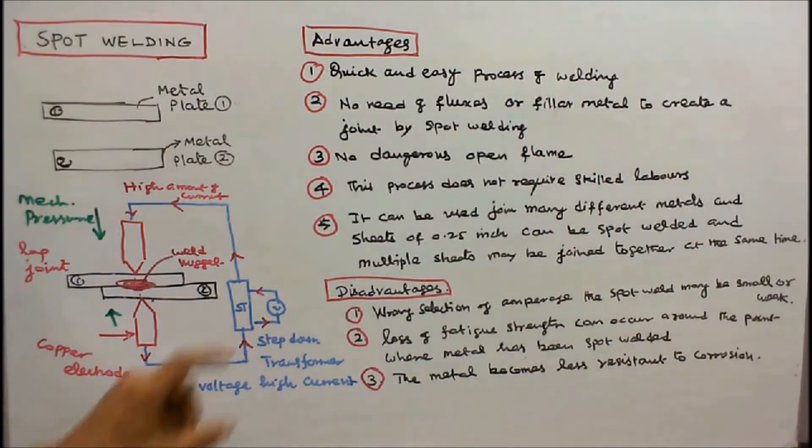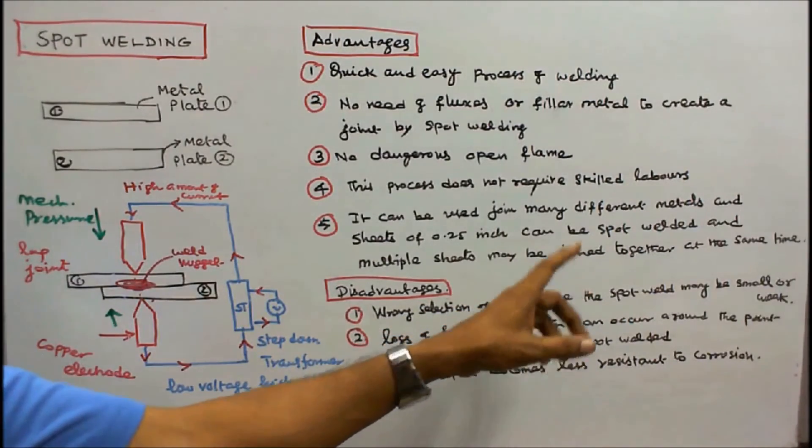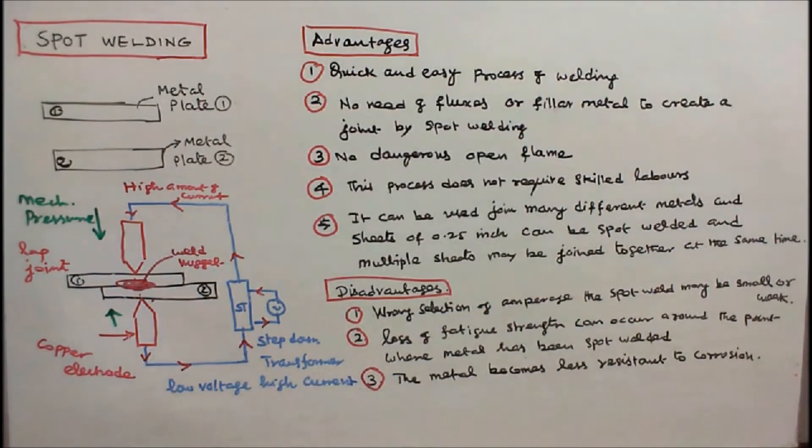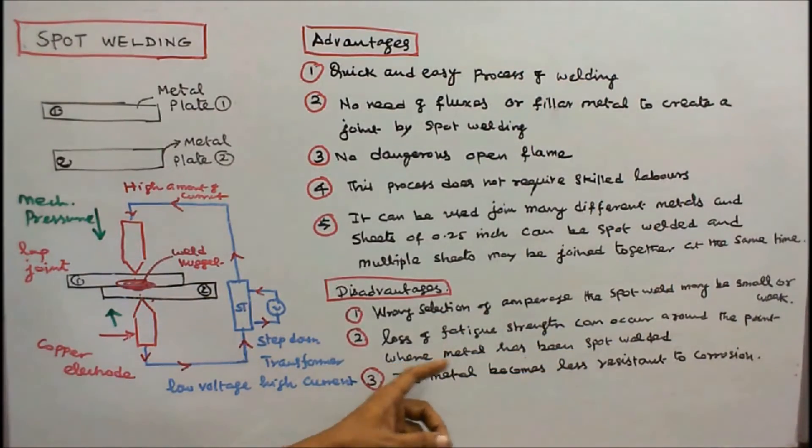Disadvantages: number one, wrong selection of amperage, the spot weld may be small or weak. Number two, loss of fatigue strength can occur around the point where metal has been spot welded.